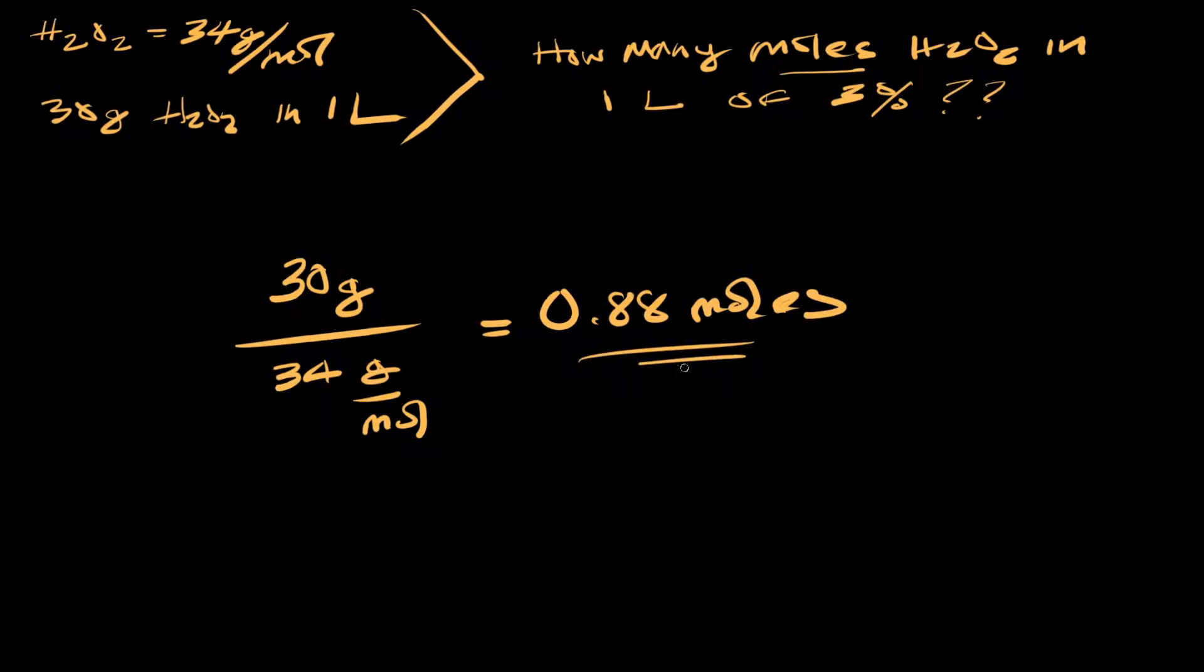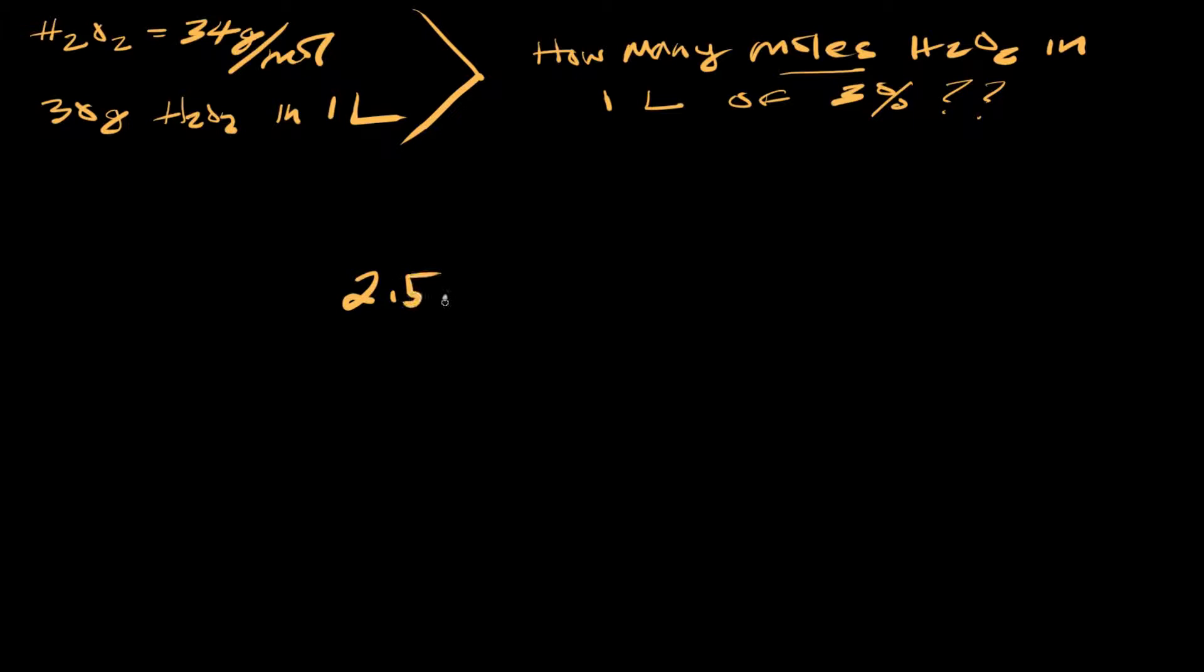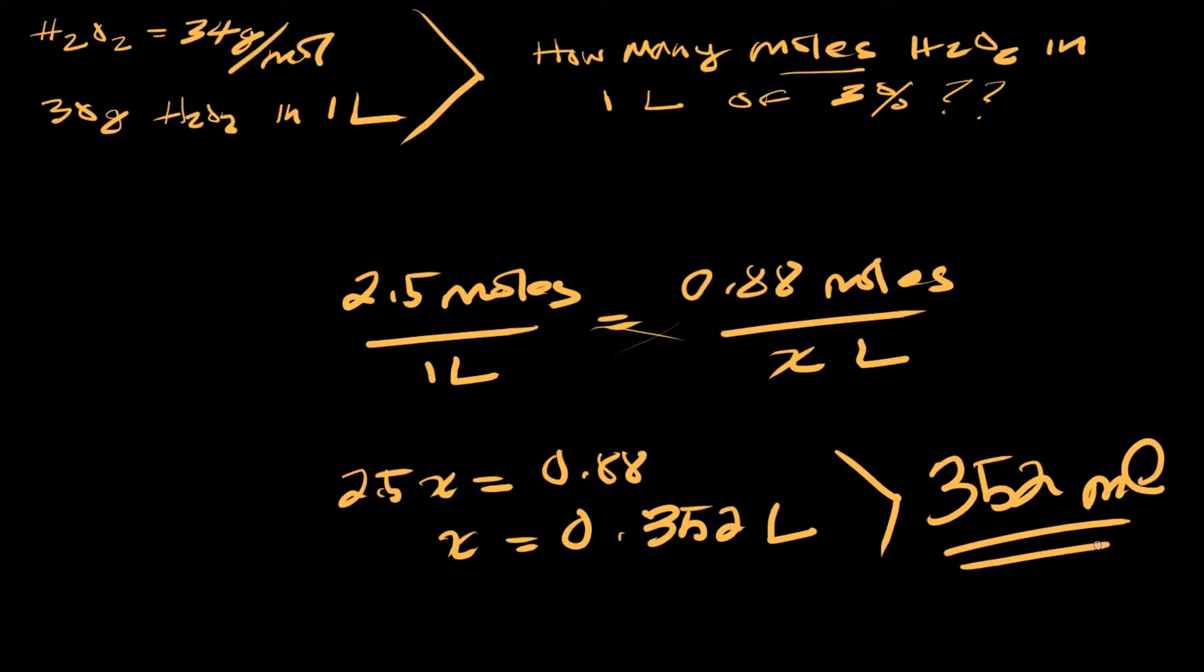Science trick number two: anytime you can use a ratio, do it. Our protocol calls for 2.5 moles of hydrogen peroxide in one liter, and we want that to be equal to 0.88 moles in some volume of water. Cross multiply and Bob's your uncle: 0.352 liters or 352 mils. Which means we want to evaporate one liter of that three percent solution down to 352 mils and we'll have our 2.5 molar solution.